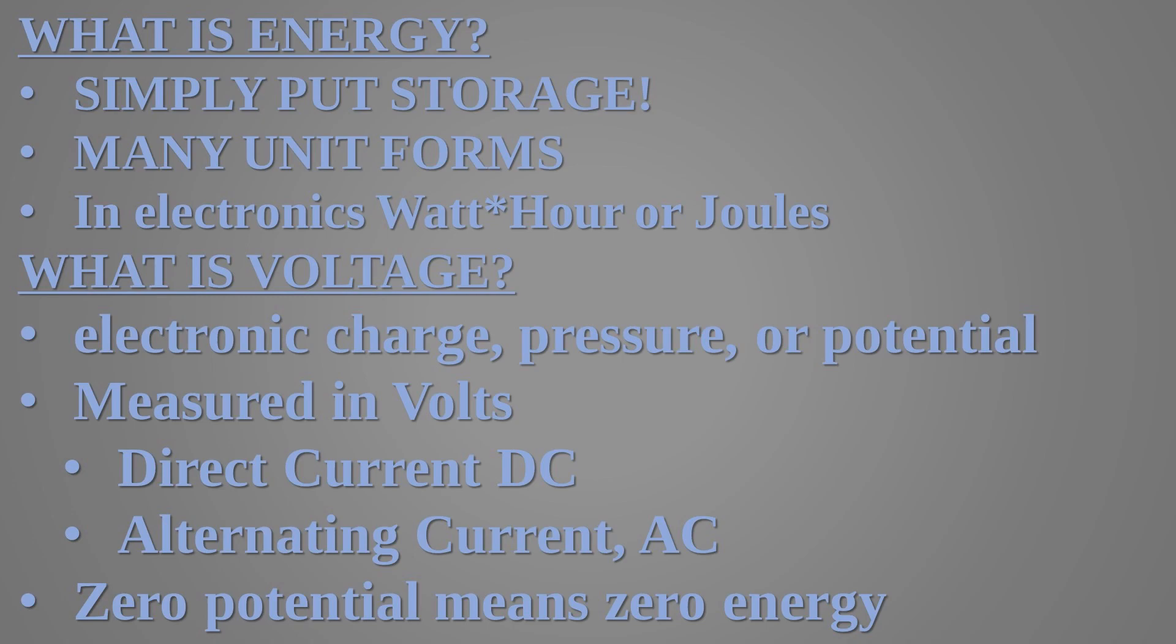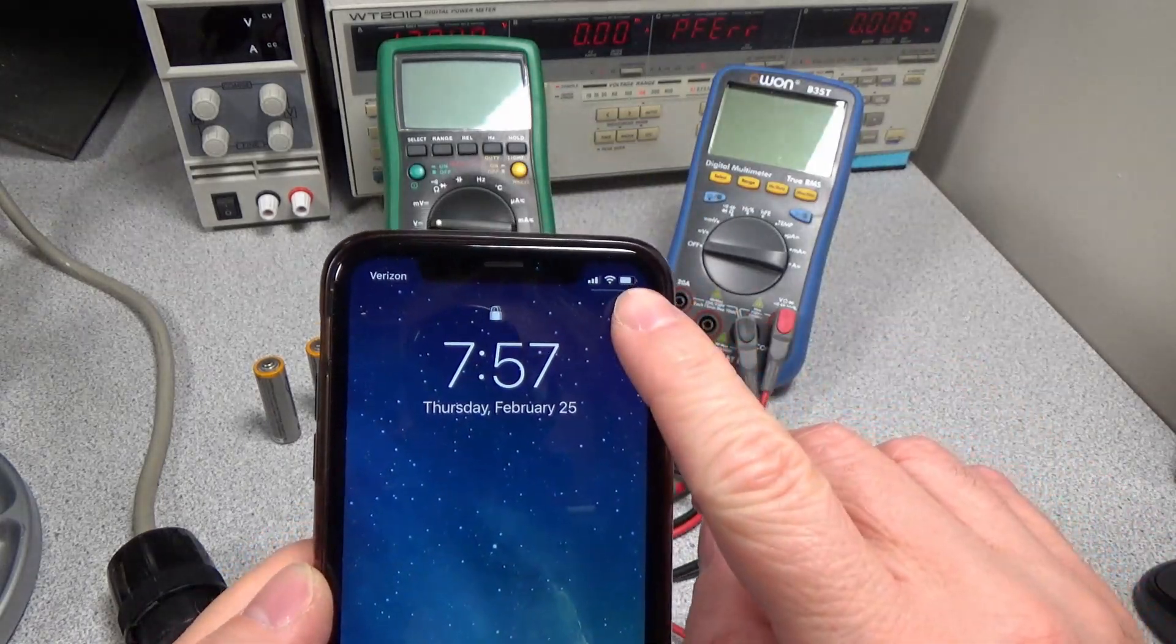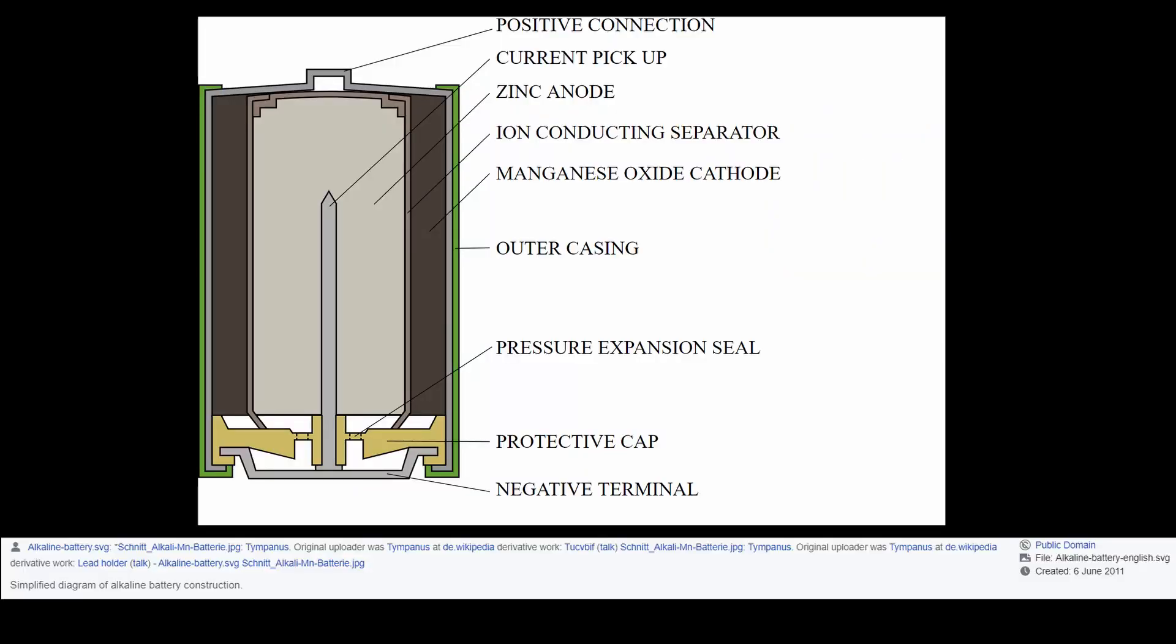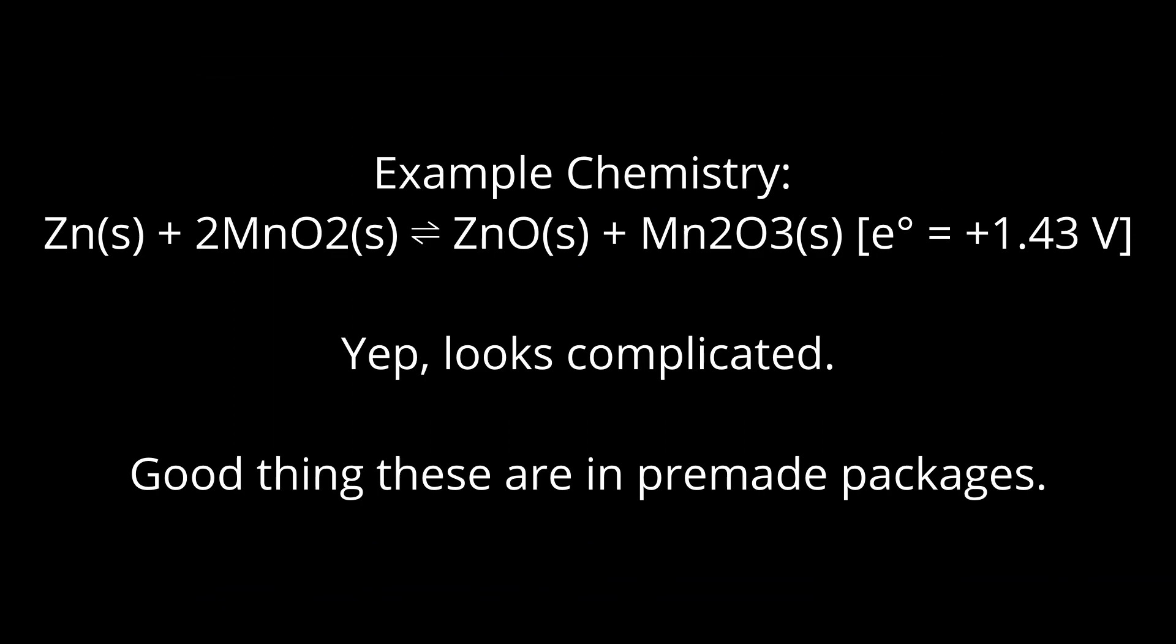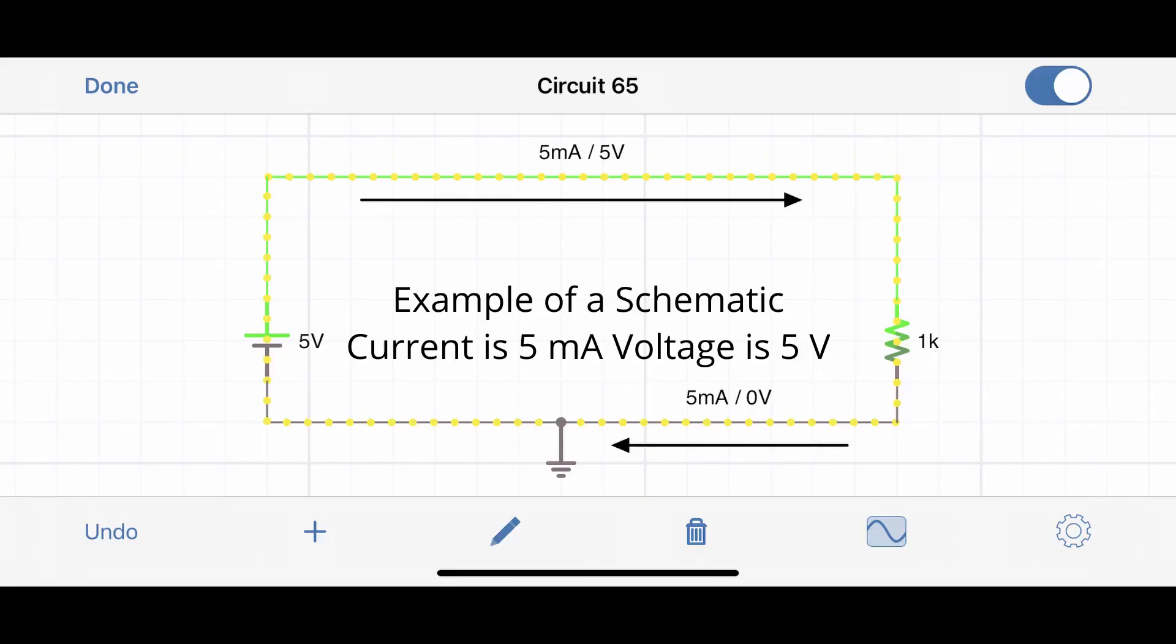A dam stores energy in the form of water. The distance the water falls is the voltage. You see the amount of energy stored in your phone, which is represented by the little icon. Energy is stored in a battery through a chemical reaction. This reaction produces an electric charge, pressure, potential, or voltage. This voltage flows with a concept called current to power your phone.